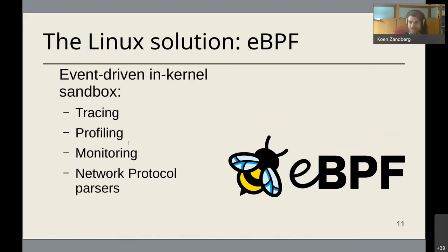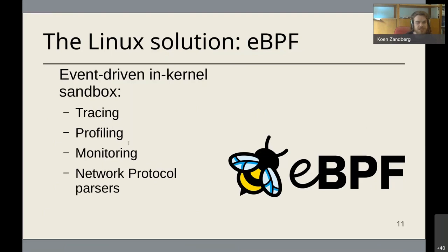eBPF is a Linux in-kernel virtual machine to sandbox simple applications. It's event-driven and you can use it for all kinds of inspection inside the Linux kernel: tracing, profiling, monitoring things like disk latency. Some people even write full network protocol parsers inside eBPF - all virtualized and sandboxed in the kernel.